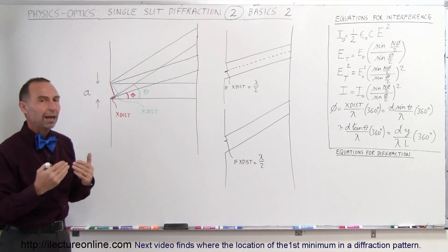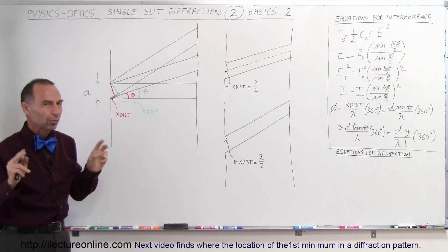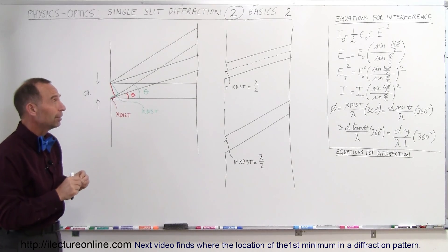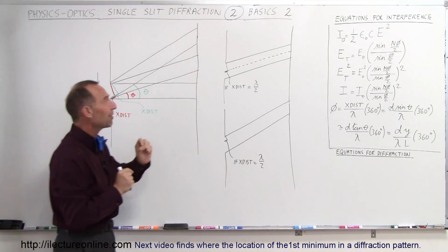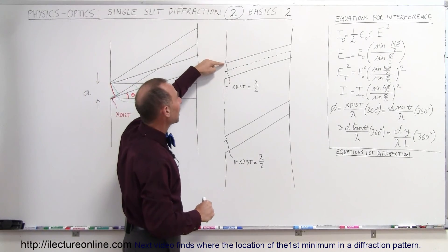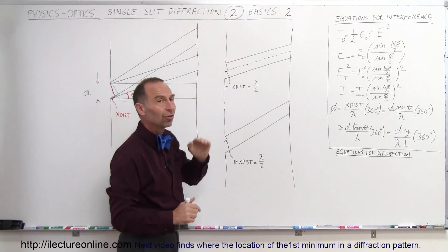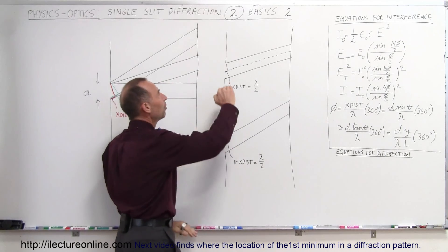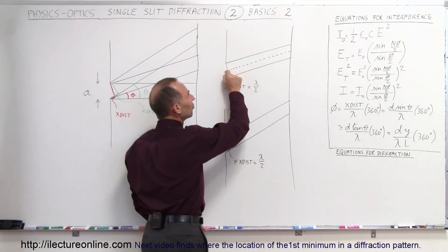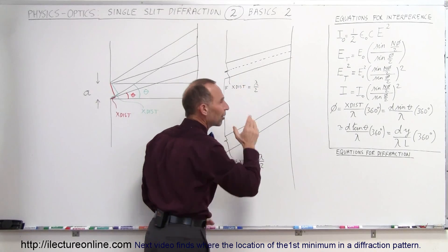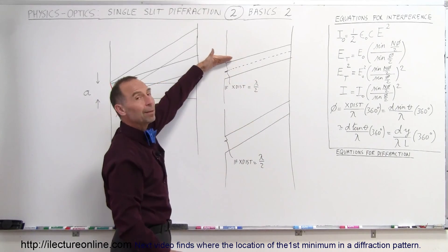The key to understanding a diffraction pattern — because we're not dealing with two separate beams like in a double slit, here we have just a single slit — is to realize that as you go further into the beam, adjacent rays will travel a farther and farther distance. What we look for is the point in the beam where the extra distance traveled by a ray is exactly half a wavelength farther than at the very beginning of the beam.